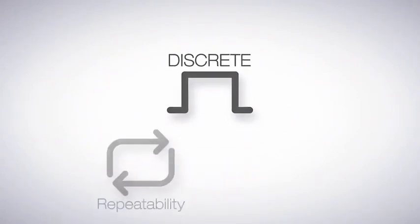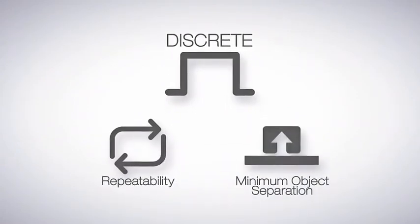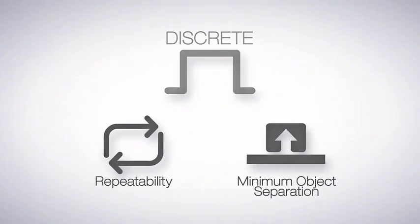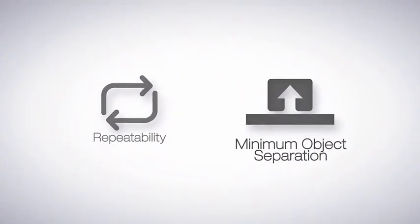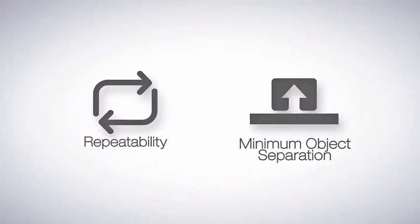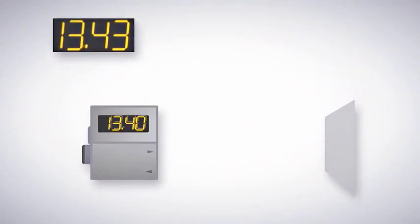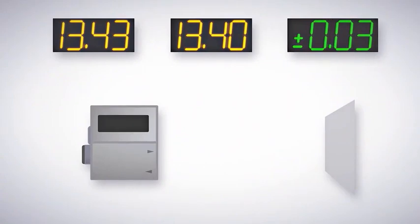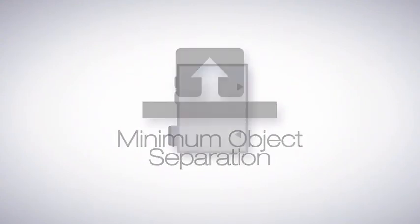In discrete applications, repeatability and minimum object separation are two specifications used to describe sensor capabilities, but not all specifications are equal indicators of real-world performance. Repeatability is the measurement of how reliably a sensor can repeat the same measurement in the same conditions. It is calculated by having a sensor detect a motionless, single-color target multiple times in a laboratory setting. For that reason, repeatability is a useful specification for comparing products, but it is not the best indicator of real-world performance.